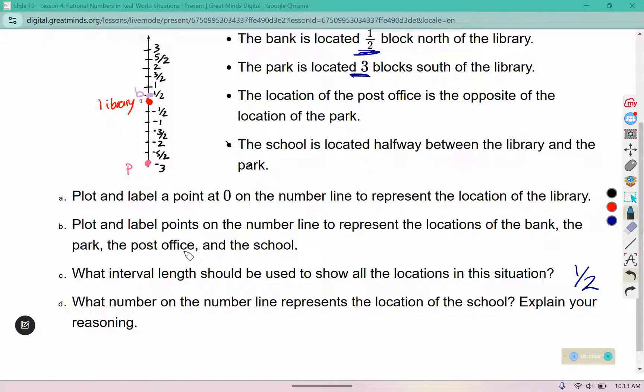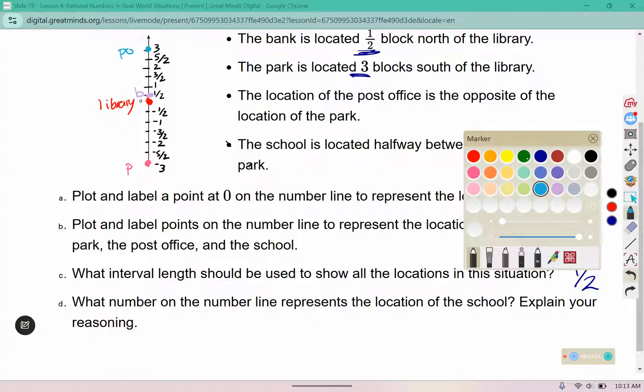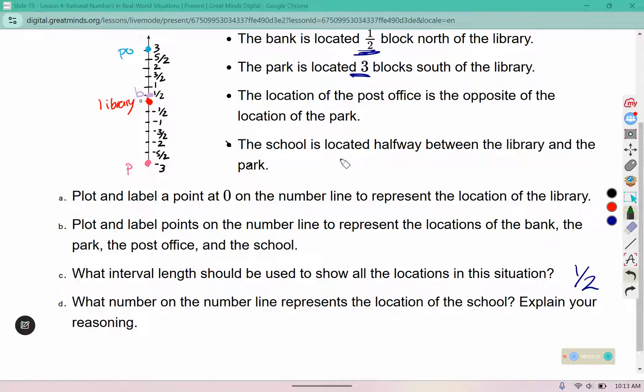Now we need the post office. It says the post office is the opposite of the park, so if the park is negative three, the post office should be positive three. We use P O for post office. And then it says the school is located halfway between the library and the park. So here's the library and the park. That was one, two, three, four, five, six below it. So we're going to go one, two, three, putting us at three halves. And that is the location of the school.